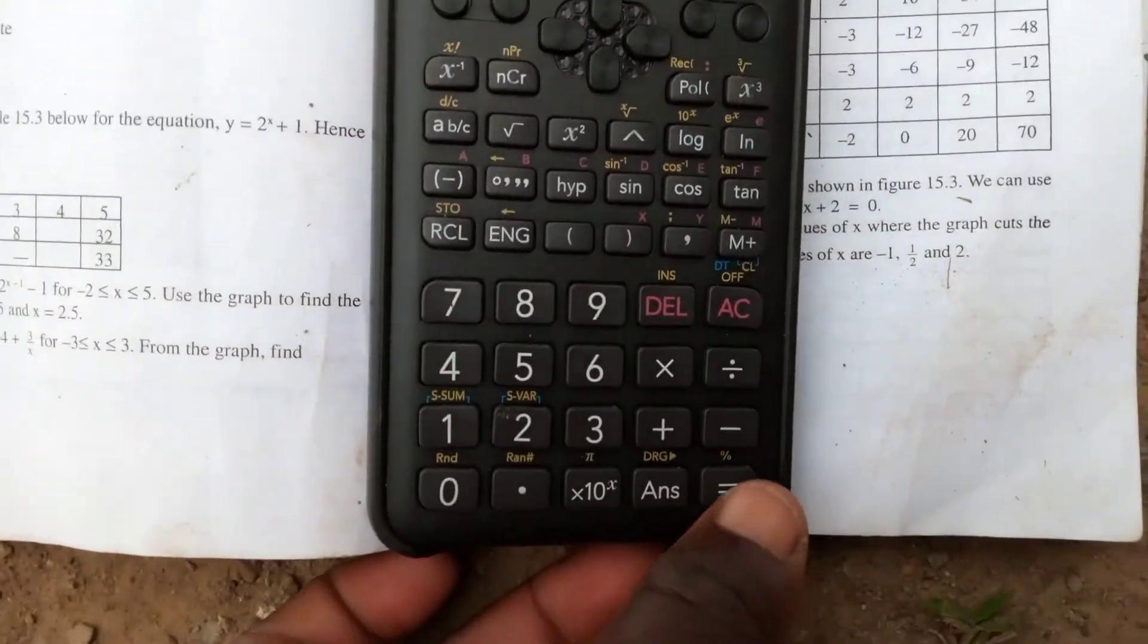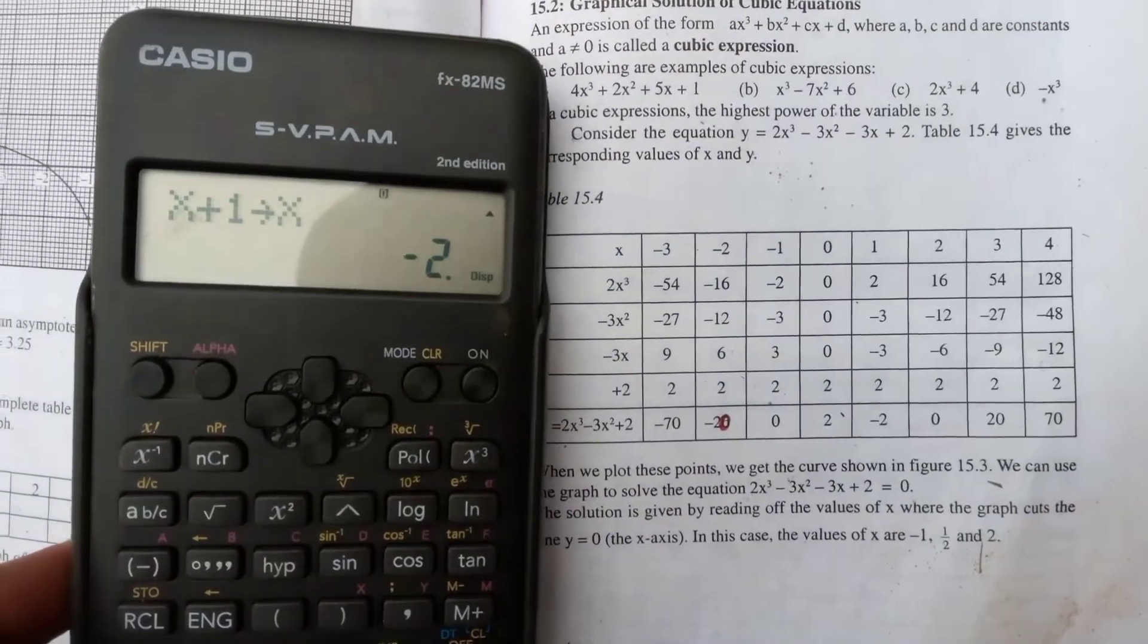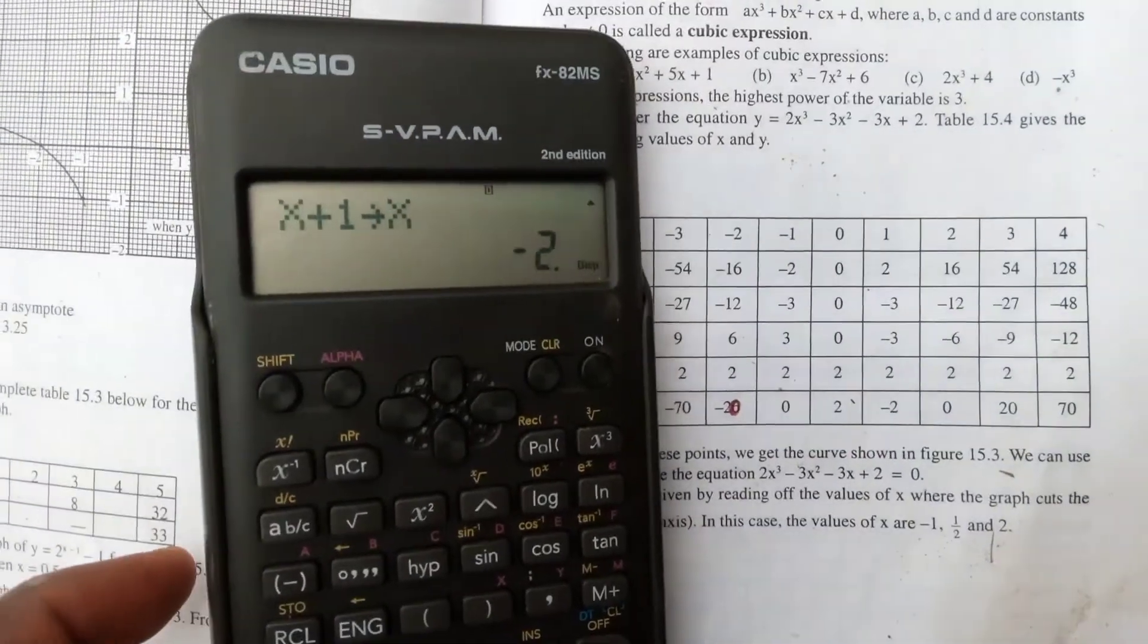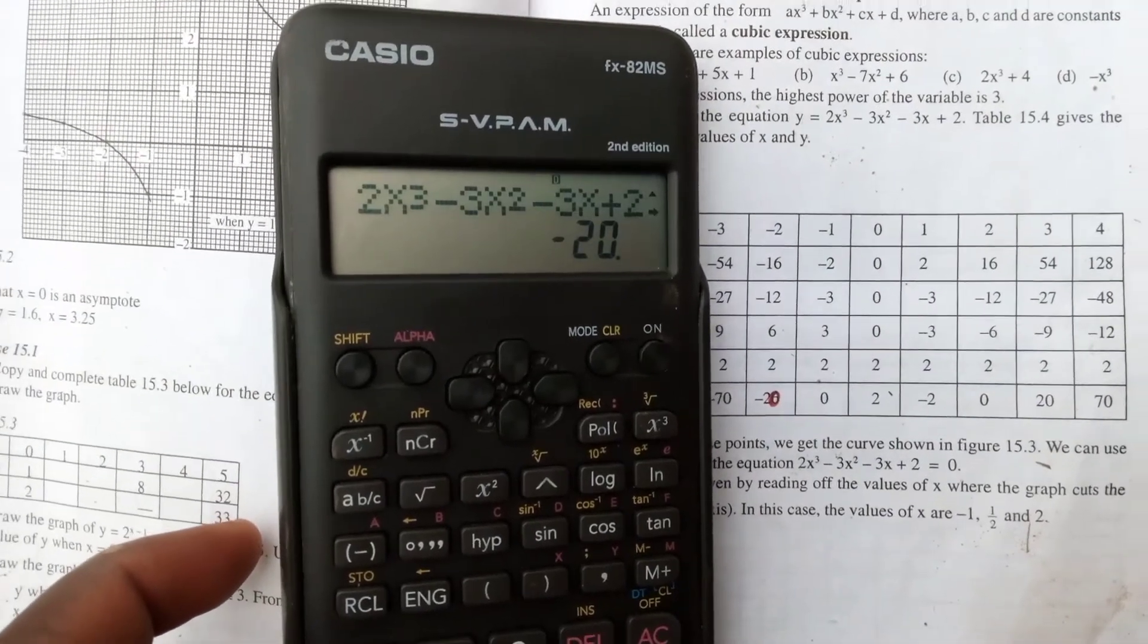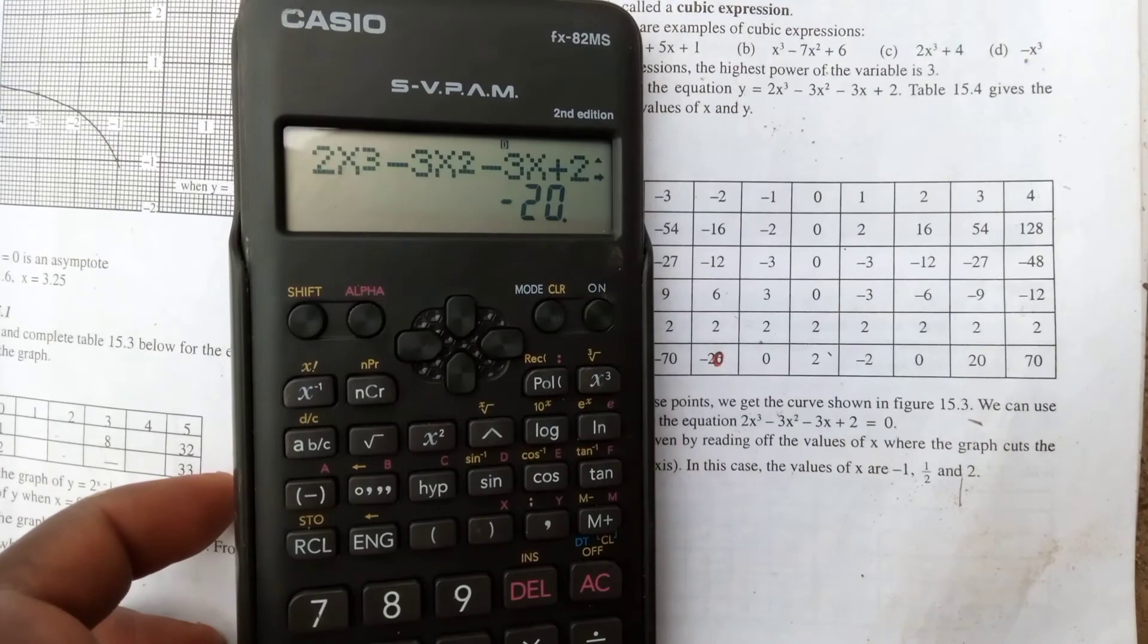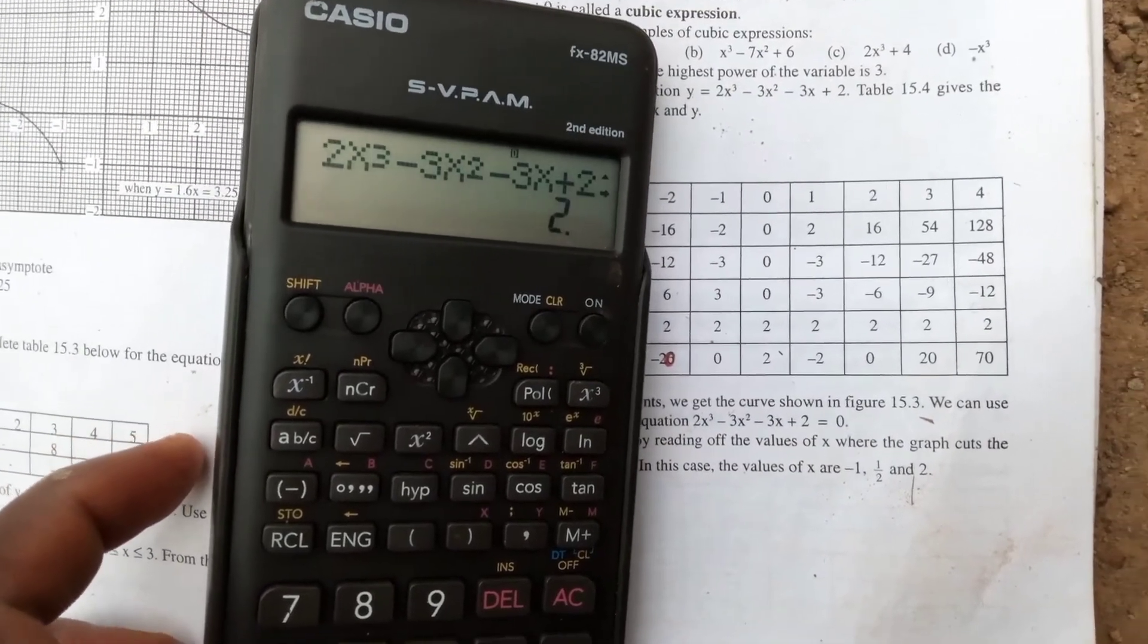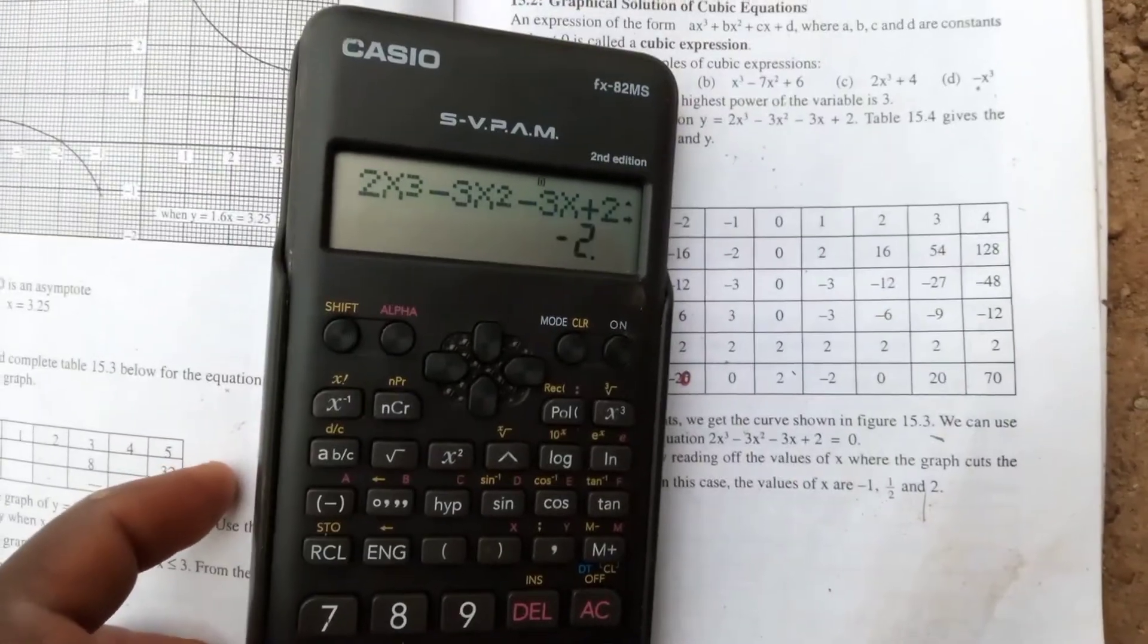If you repeat pressing equal sign the third time, it will give you the second value of x, which is negative 2. If you press equal the fourth time, it will give you the second value of y. The process runs through all the values until you have all the values of that equation.